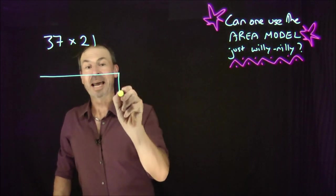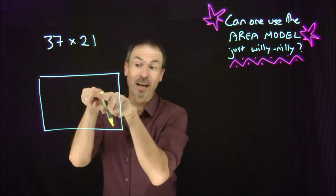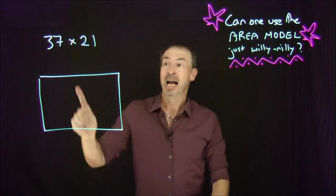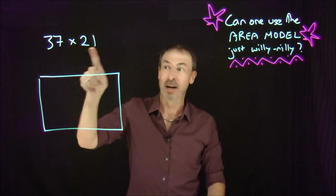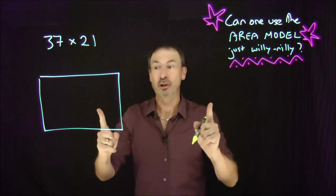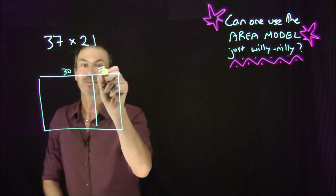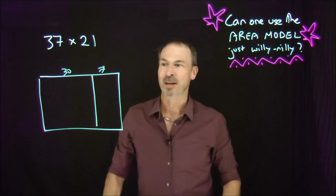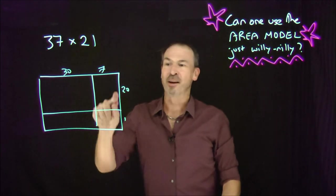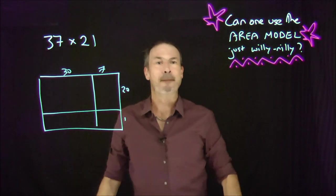I can ask: what is the area of a rectangle that's 37 by 21? Because working out that area would be working out exactly that computation. I don't like the number 37 or 21, but I can see how to chop up those numbers into friendly ones. For example, 37 becomes 30 and 7, and 21 becomes 20 inches and 1 inch. I've chopped up the rectangle into four pieces with much friendlier numbers.